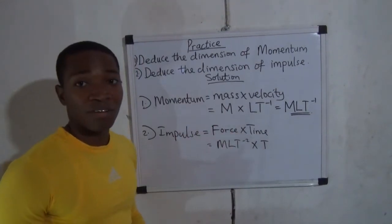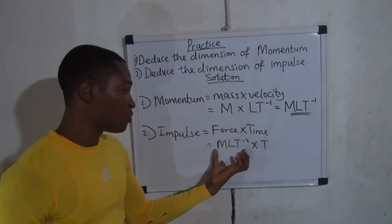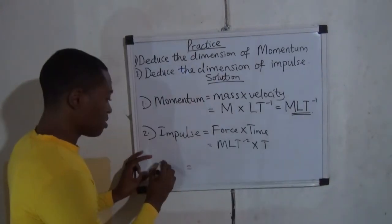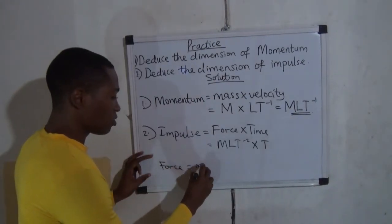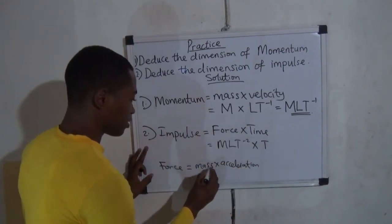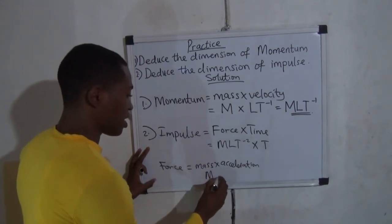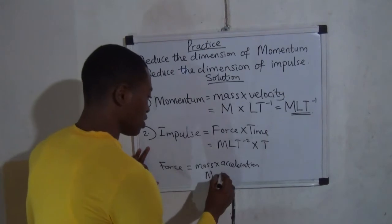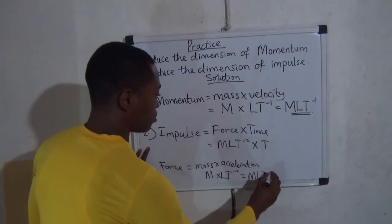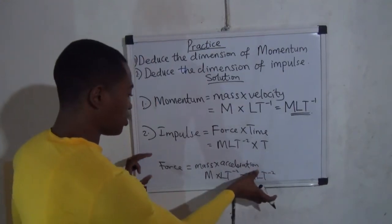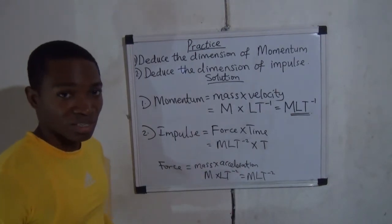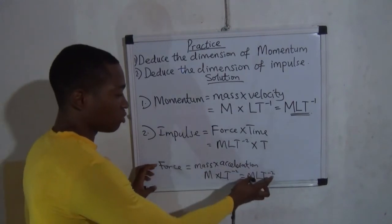In case you forget the dimension of a particular quantity you have to combine — for example, if you forget the dimension of force — remember that the formula for force is mass times acceleration. The dimension of mass is M, and the dimension of acceleration is LT to the power of minus two. Combining these gives MLT to the power of minus two, which is the dimension of force.